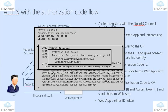How will that look like? AuthN is with the authorization code flow. OpenID — you can see how that works and you can see the examples.